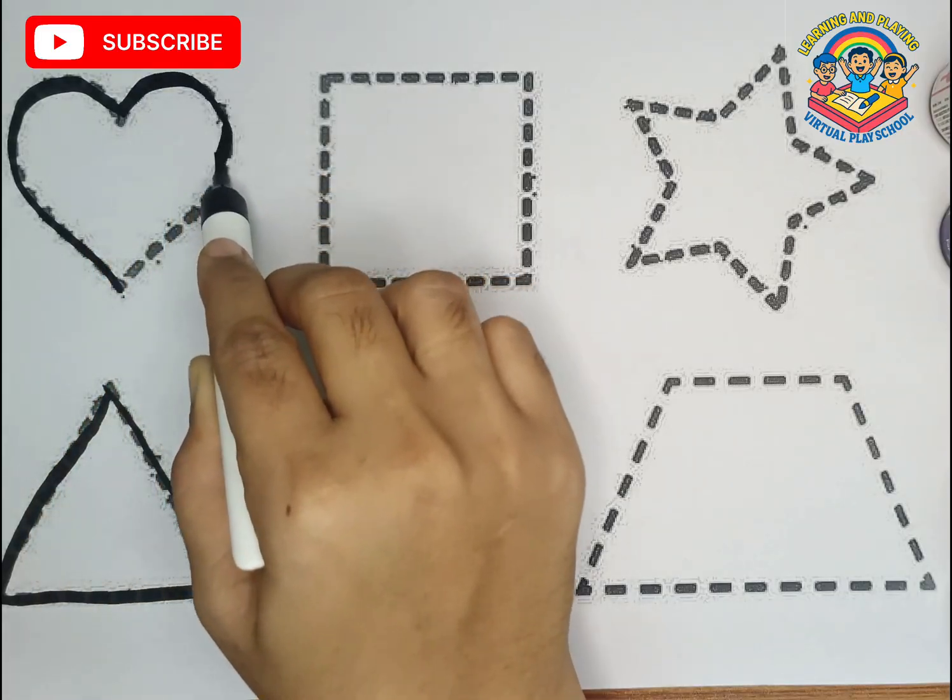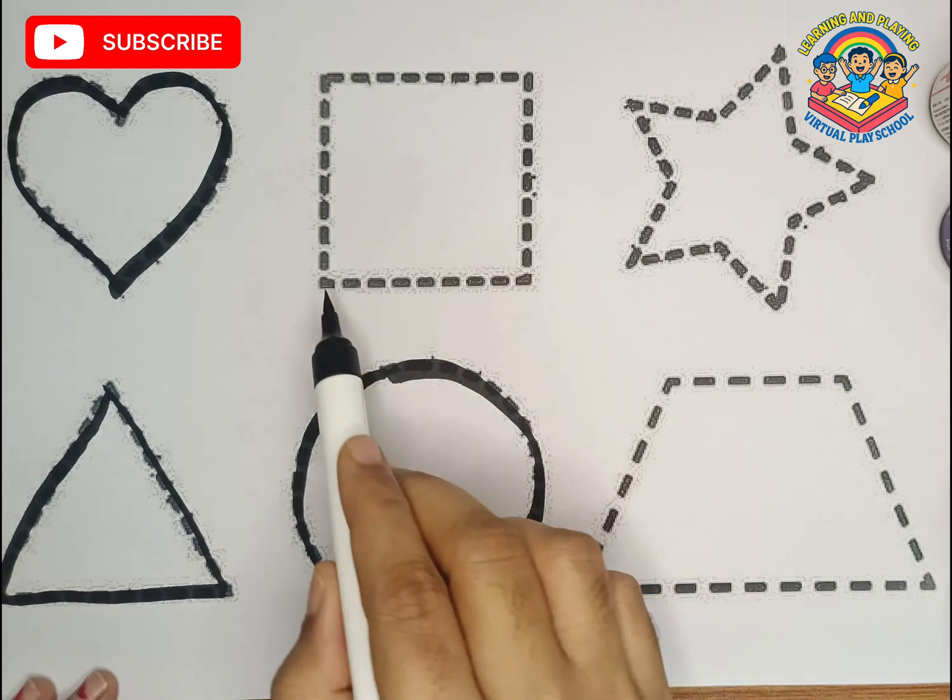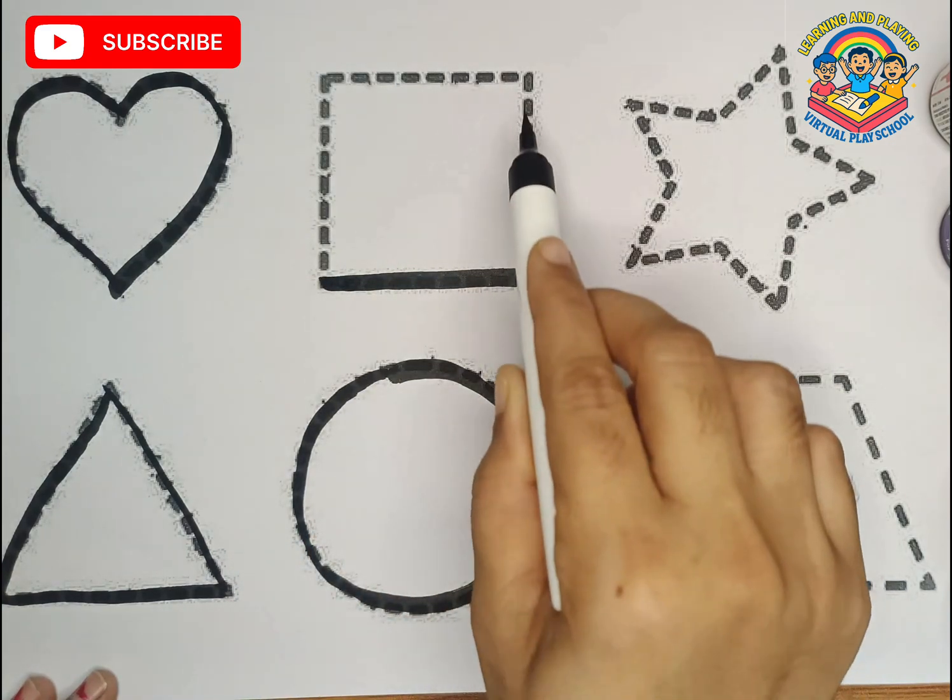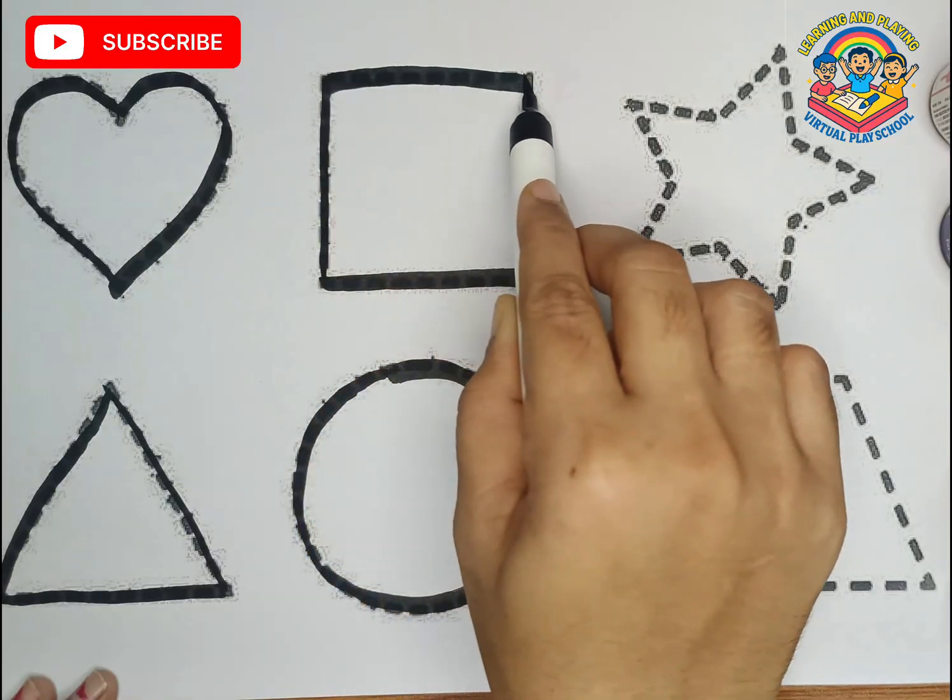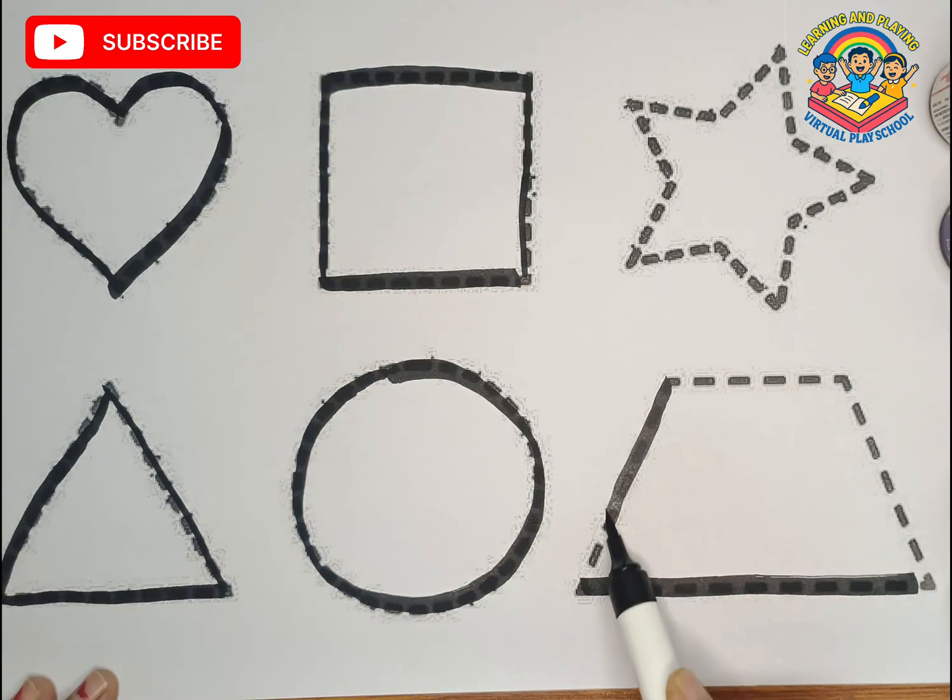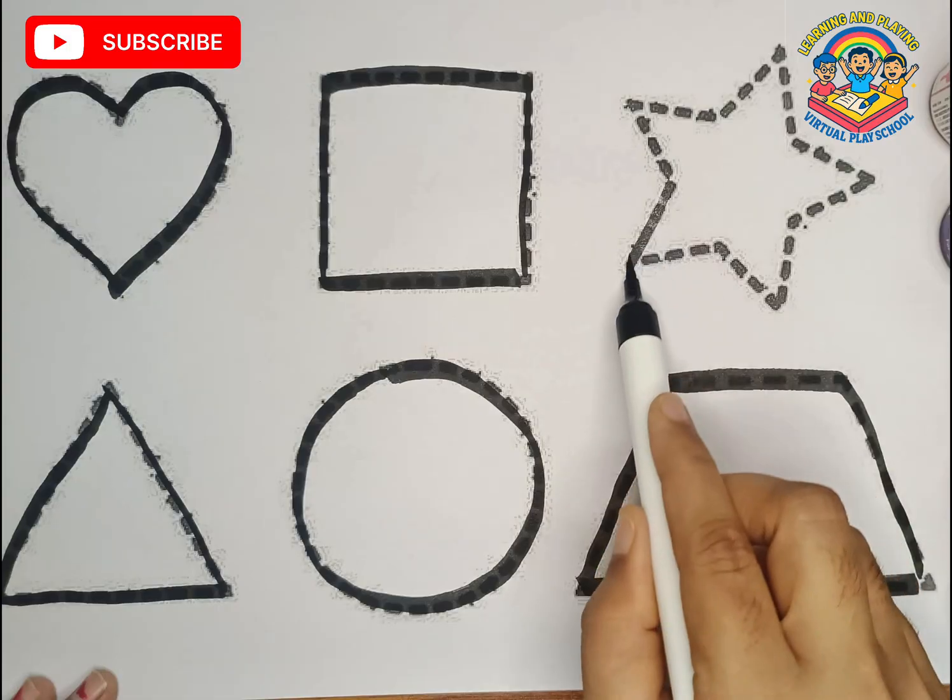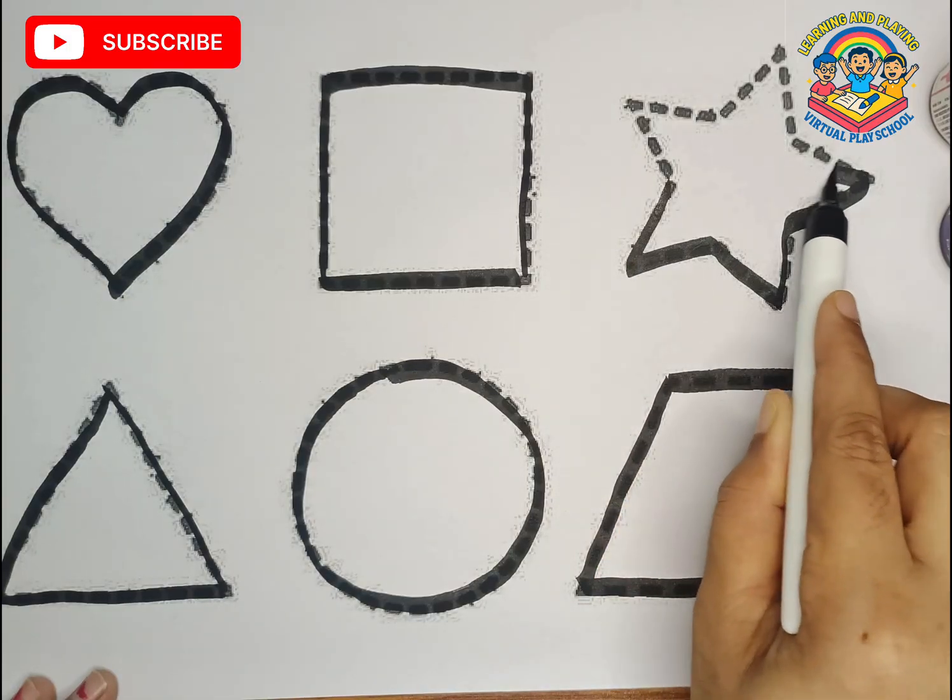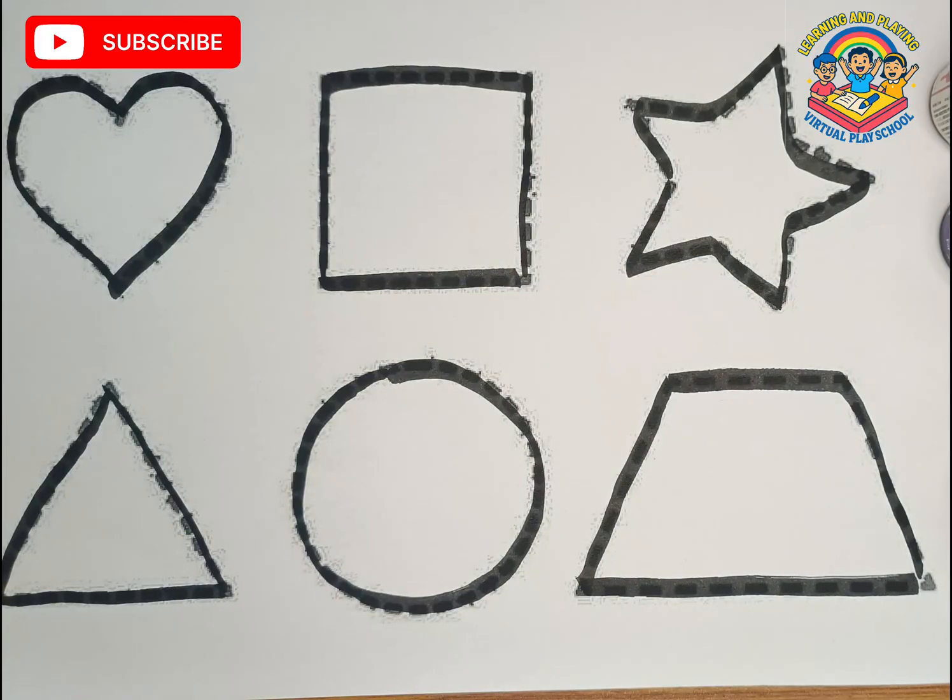This is heart shape symbol, this is square, this is trapezoid, this is star. Let's color in the shape.